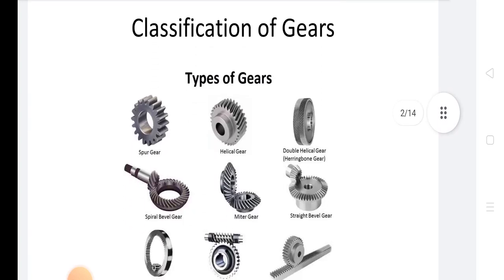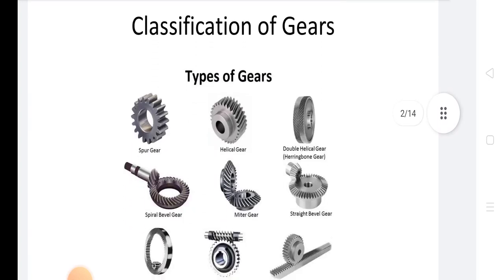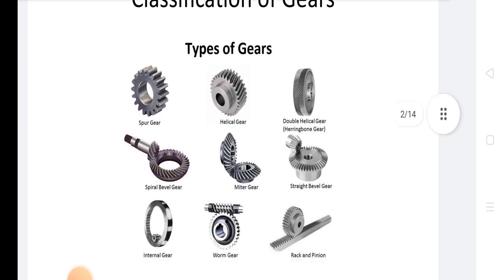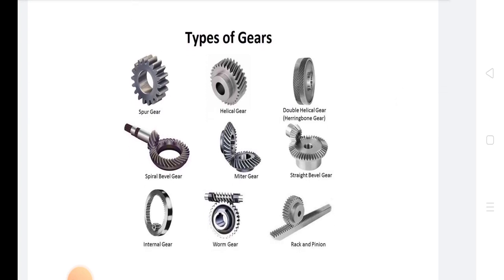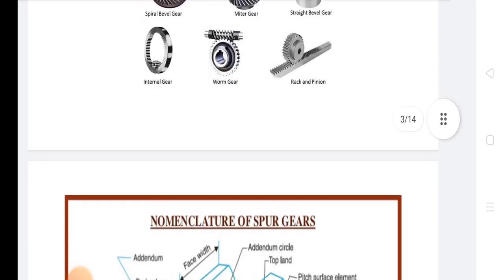This is the classification of gears. The types include Spur Gear, Helical Gear, Double Helical Gear, Spiral Bevel Gear, Miter Gear, Straight Bevel Gear, Internal Gear, Worm Gear, and Rack and Pinion Gear. These are the types of gears.